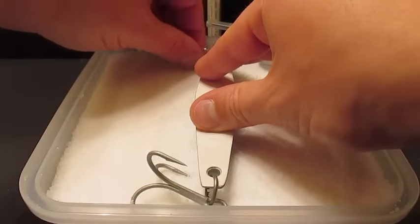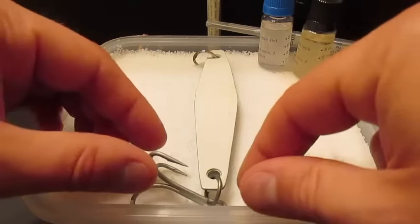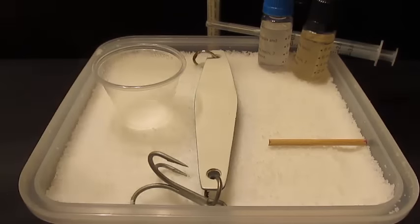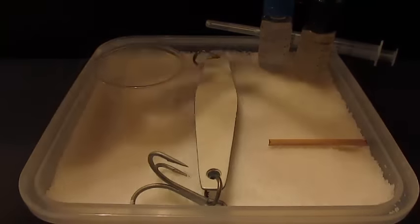I've placed the jig in a tray of salt. This is useful because the salt is hard enough to support the jig, but also soft enough that the jig can be pushed into it, allowing you to have a level surface to apply material to.